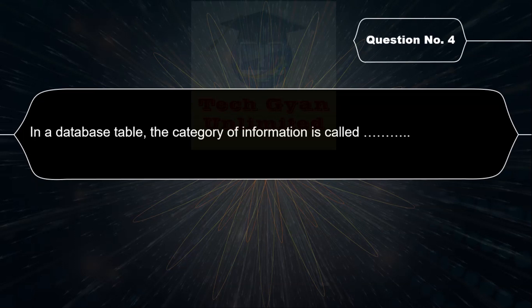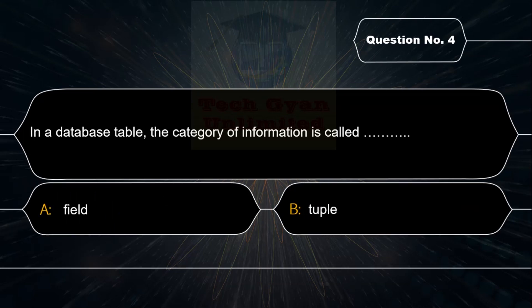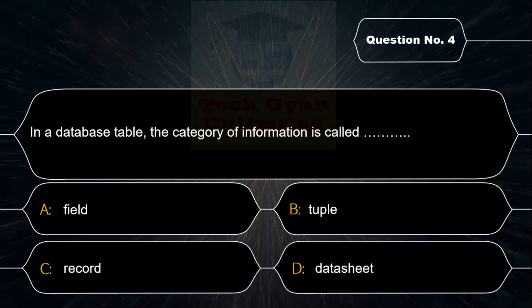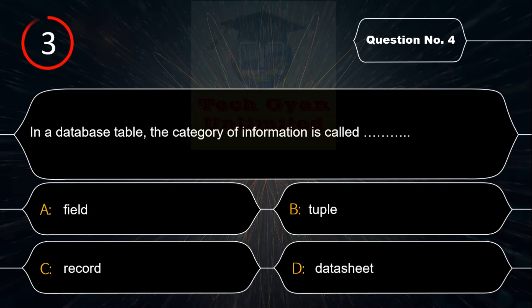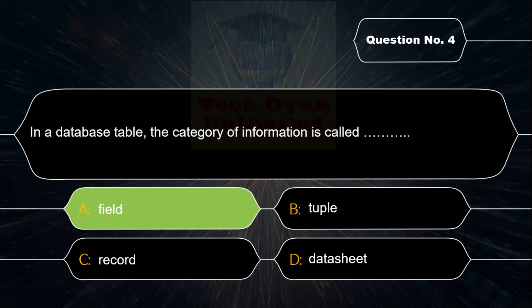In a database table, the category of information is called: Option A: Field, Option B: Tuple, Option C: Record, Option D: Datasheet. Correct answer is Option A — in a database table, the category of information is called a Field.